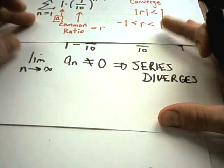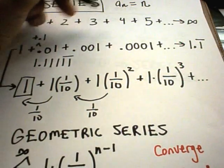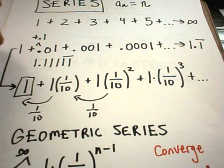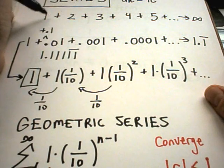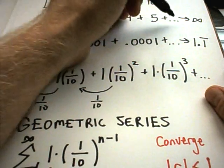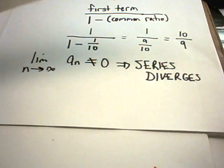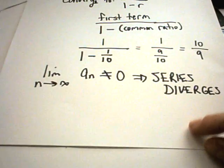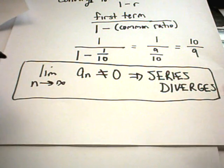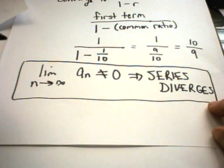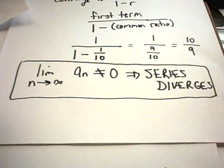Intuitively, if the limit isn't becoming zero, it means the things you're adding up aren't getting smaller and smaller. If they stop getting smaller at some value — say, one-half — you're still adding up infinitely many one-halves, and that's going to go off to infinity. This is a very useful result. You'll almost want to get in the habit of asking, for any series, whether that limit equals zero or not. If not, it diverges — you're done, and the problem is a lot easier.